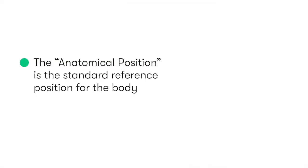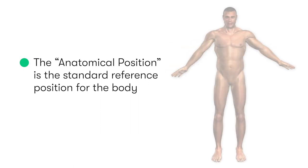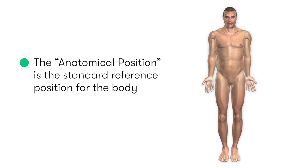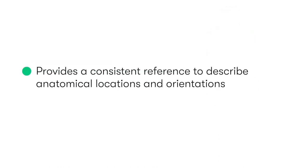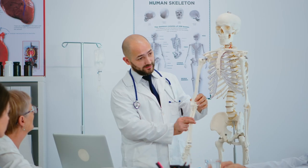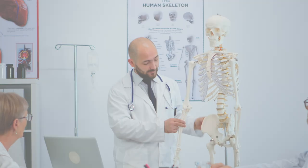The anatomical position is the standard reference position for the body. It involves the person standing upright with their feet together, their arms by their side, and their palms turned to face forwards. By always having this consistent body position, we always have a permanent reference upon which to describe anatomical locations and orientations.